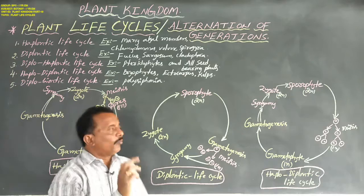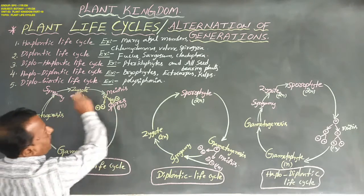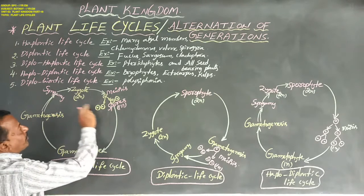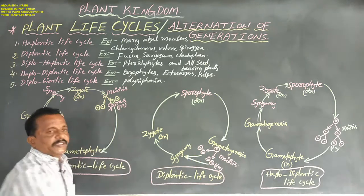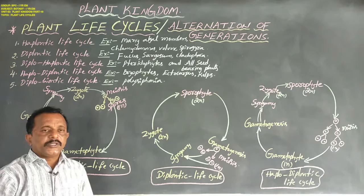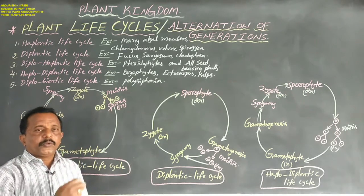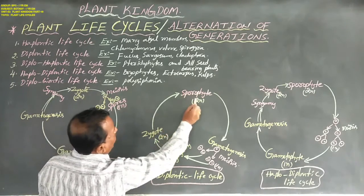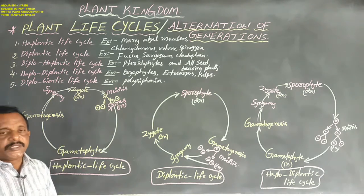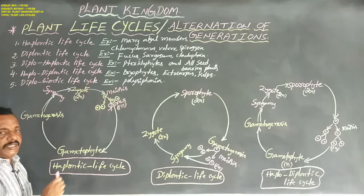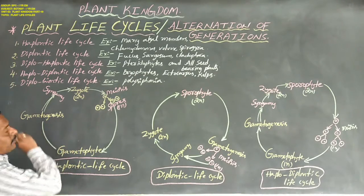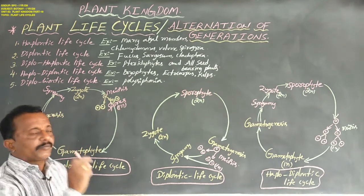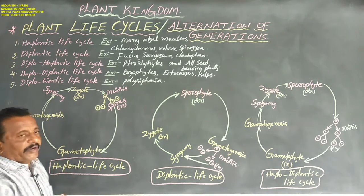In plants, both haploid and diploid cells undergo mitosis. This phenomenon leads to the formation of a haploid plant body and a diploid plant body. In the haploid plant body, haploid gametes are always produced — that is one number of chromosomes or one set of chromosomes. That haploid plant body is named the gametophytic plant body.